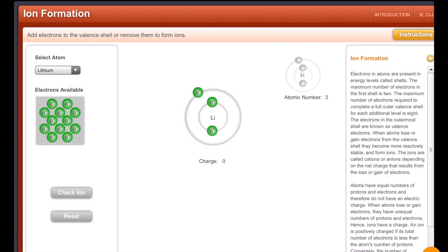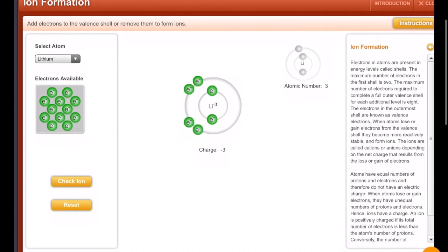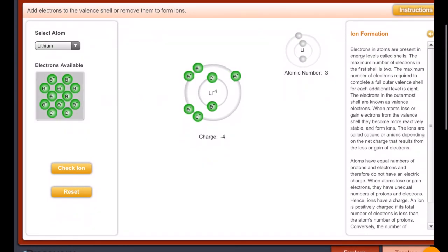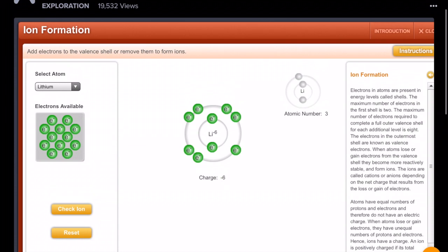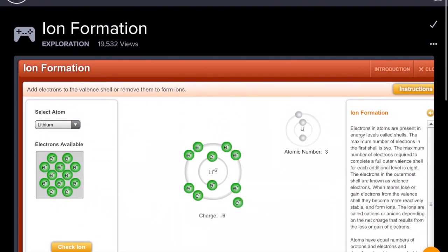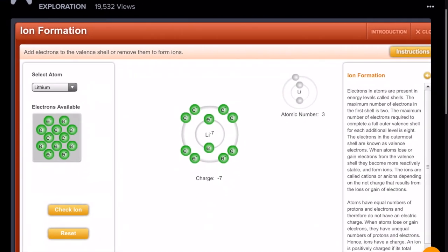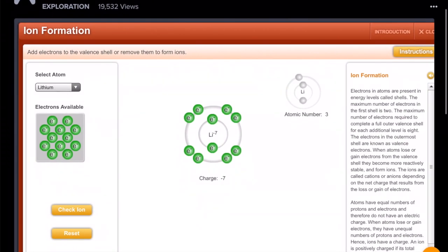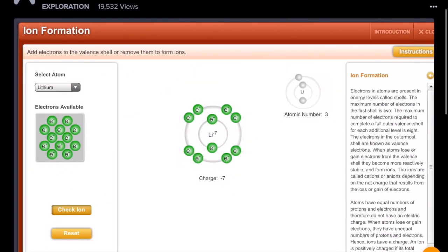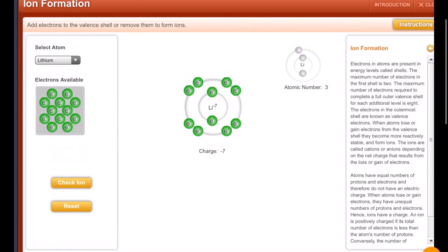And so I think it could either gain seven, because I know they want eight. Maybe you're already ahead of me in saying, no, nothing gains seven. But if you try it, I need one more electron. I'm dragging them over. The charge would be negative seven, and then if I click check ion over here at the bottom left, it says, that's not correct. Try removing electrons from the outermost shell.